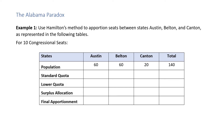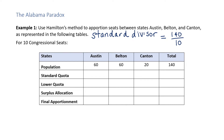The Alabama Paradox, Example 1. Use Hamilton's method to apportion seats between the states Austin, Belton, and Canton as represented in the following tables if there are 10 congressional seats. In Hamilton's method, we begin by finding a standard divisor. That standard divisor is the entire population — in this instance it's 140 — divided by the number of items to be apportioned, that's 10 congressional seats. So the standard divisor here is 14.